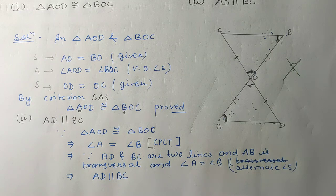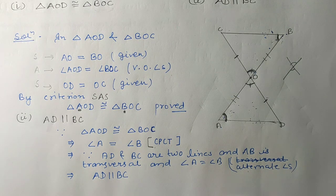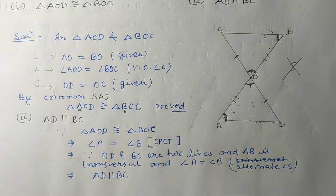Students, just revise the first criterion — Side-Angle-Side — as it is the most important criterion for congruency of triangles. If you understand it well, you will easily grasp all the other criteria. The main concept of this chapter is the shortcut to prove two triangles are congruent. We will see the next two criteria in the next part of the video. Thank you.